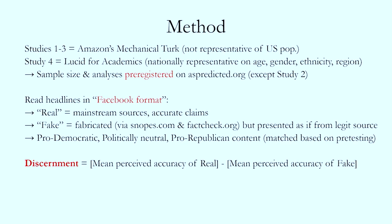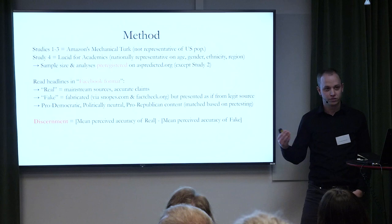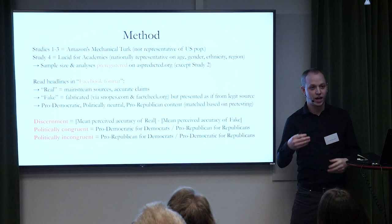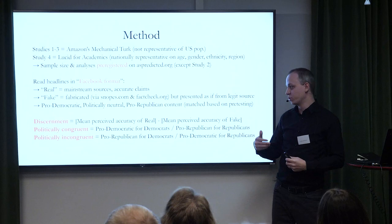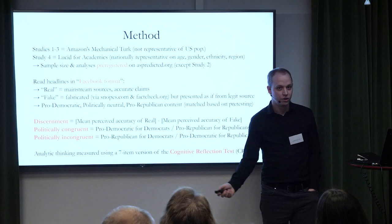When I say discernment, I mean overall accuracy. Best case, people say all the true stuff is true and all the false stuff is false — a discernment score of one. We're using the CRT to measure analytic thinking broadly. Here's the famous bat-and-ball problem: a bat and ball cost $1.10 total; the bat costs $1.00 more than the ball. How much does the ball cost? People say 10 cents, but that's wrong — if the ball cost 10 cents, the bat would cost $1.10 and the total would be $1.20. The correct answer is 5 cents.